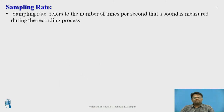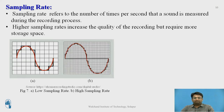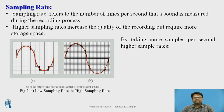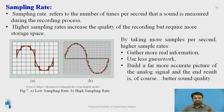A sampling rate refers to the number of times per second that sound is measured during the recording process. A higher sampling rate increases the quality of the recording but requires more storage space. As shown in the diagram, as the sampling rate increases, we have more detailed information about the signal. By taking more samples per second at a higher sample rate, we can gather more real information about the signal, use less guesswork, build a far more accurate version of the analog signal, and ultimately achieve better sound quality.